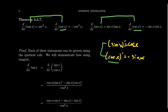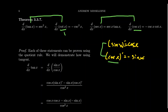Cotangent is equal to cosine over sine. If you apply the quotient rule to that derivative you can show by a similar argument that cotangent's derivative is negative cosecant squared. Similarly, secant is one over cosine — you can use the quotient rule there as well — and cosecant is one over sine. I'll leave it to the viewer to verify those results. You're going to want to know these trigonometric derivatives; this is something worth memorizing so you don't have to re-derive them each time.